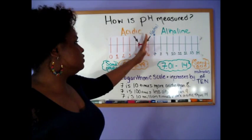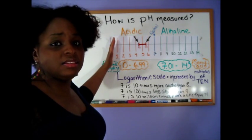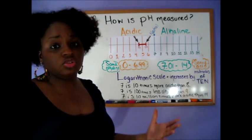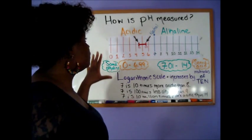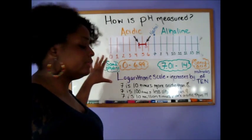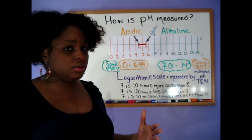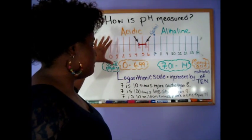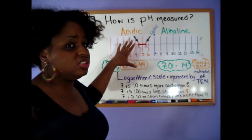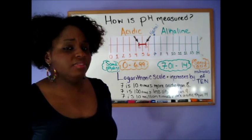So as the scale decreases and gets closer to zero, the more acidic it gets and basically the stronger the acid is. Now for even the strongest acid, there's some alkaline involved. So whatever acid, whichever acid you have on the pH scale, you're still going to have some alkaline involved if that makes sense.